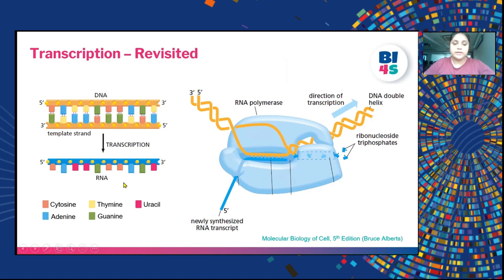RNA is similar in structure to DNA but is single-stranded in nature. DNA is composed of four bases: cytosine, adenine, thymine and guanine — that is A, T, G and C. However, RNA is composed of adenine, cytosine, guanine and uracil — it does not have thymine.